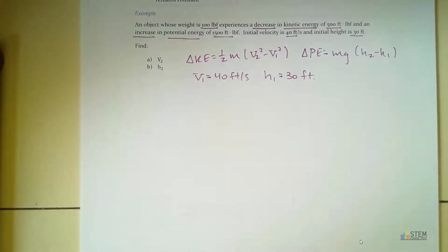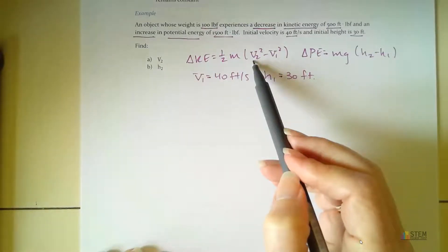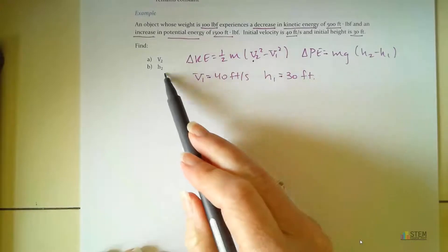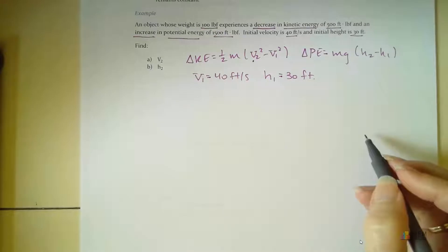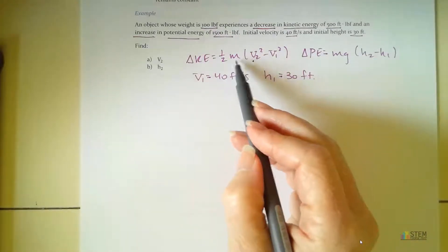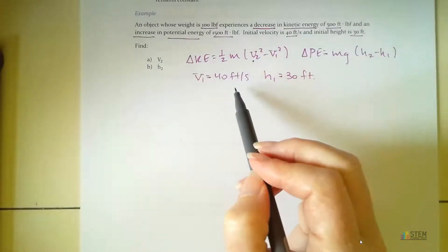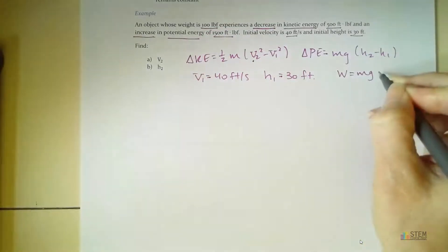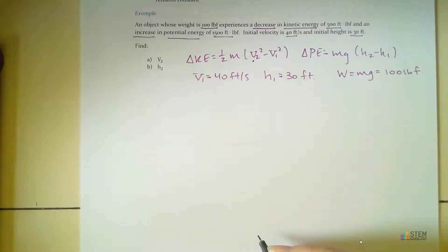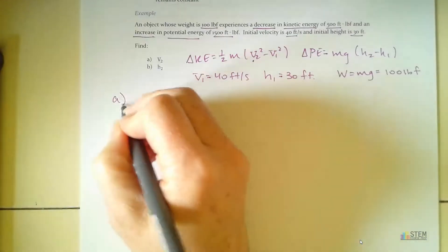All right, so now we know that. Now what we want to do is we want to find velocity and then height. So to get velocity, we're going to use this kinetic energy equation. To get our height, we'll use the potential energy equation. So if we notice, this kinetic energy equation needs mass. We don't have mass given to us. We were given weight. Remember, weight is not mass. Weight is m times g. So m times g is 100 pound force. So first, in order to use this kinetic energy equation, let's find mass.